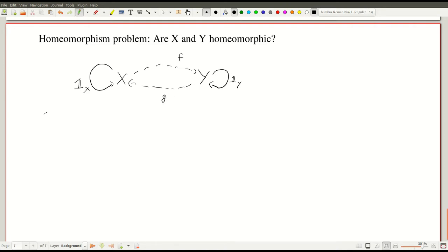So suppose we are given a functor F from topological spaces to, let us say for definiteness, groups. Then if X and Y are homeomorphic, we get a solution to the following.